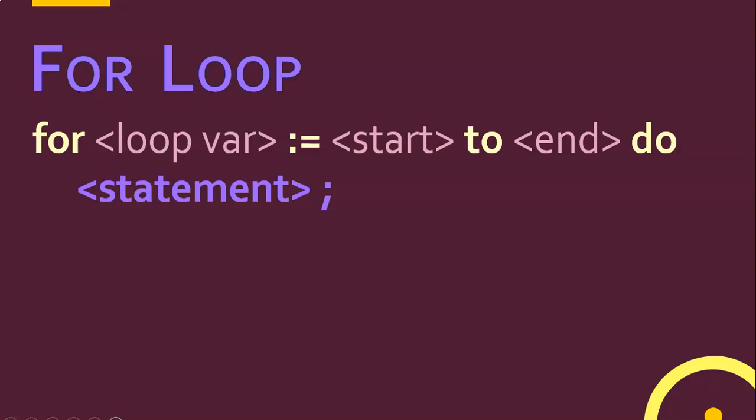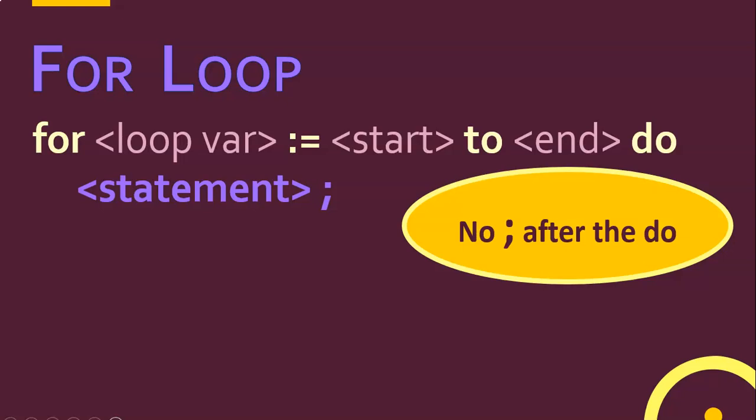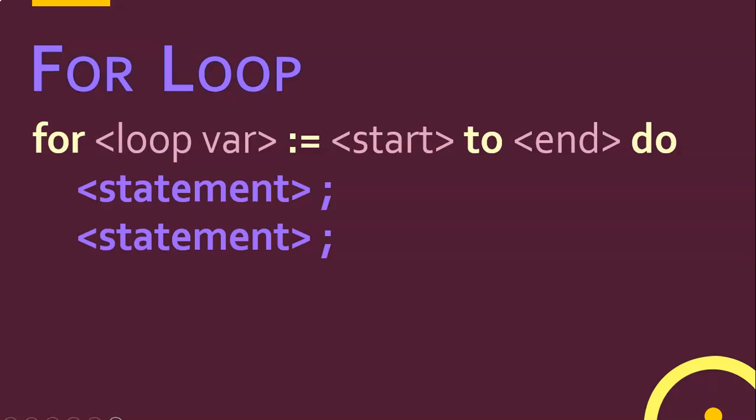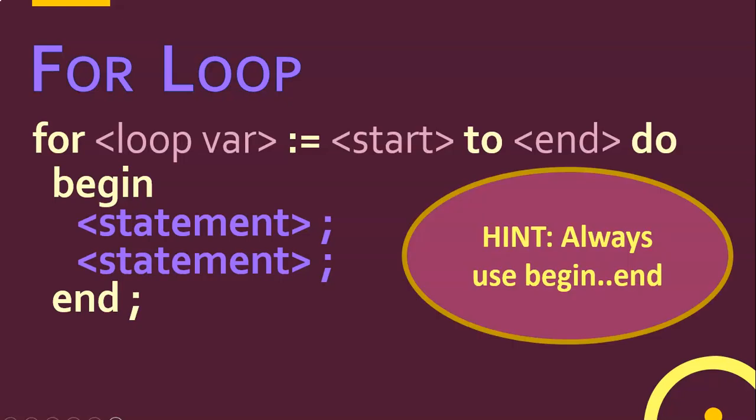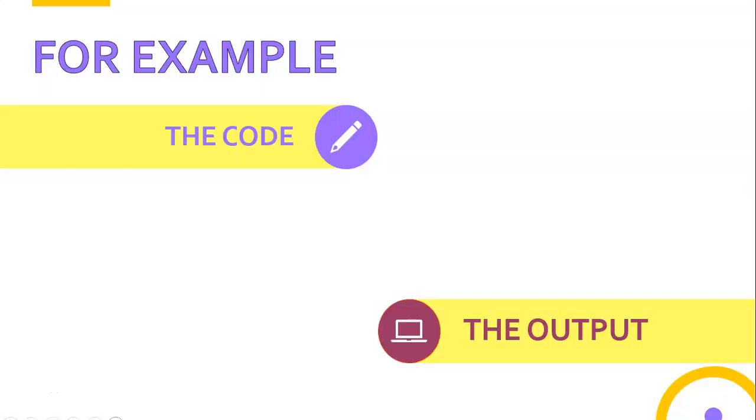The for loop will repeatedly do that statement however many times you specified. A little tip: don't put a semicolon after the 'do', because then you are saying do nothing so many times. A lot of people accidentally put a semicolon after the do and then their loop doesn't work. Also, if you've got two statements you want to loop, the loop will only run the first statement. Just like with if statements, if you want multiple statements inside the loop, put them in a begin and end block. I suggest always using begin and end so you can clearly see where the loop begins and ends.